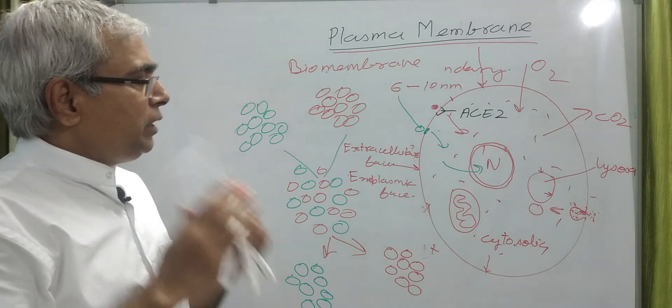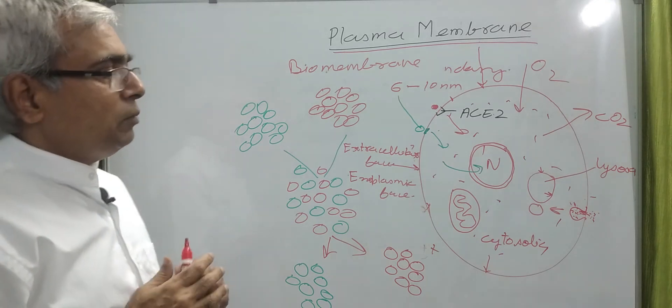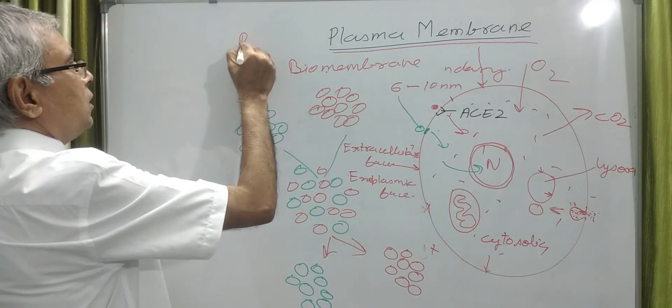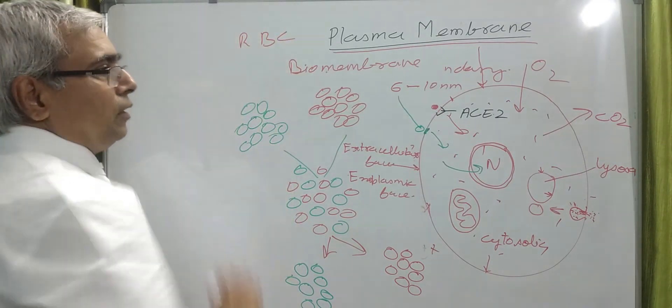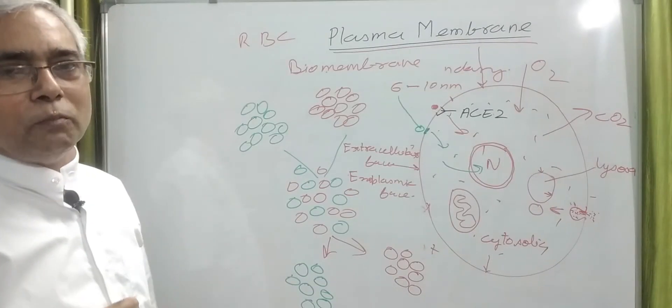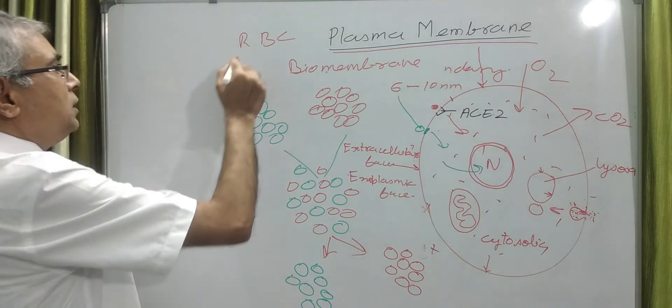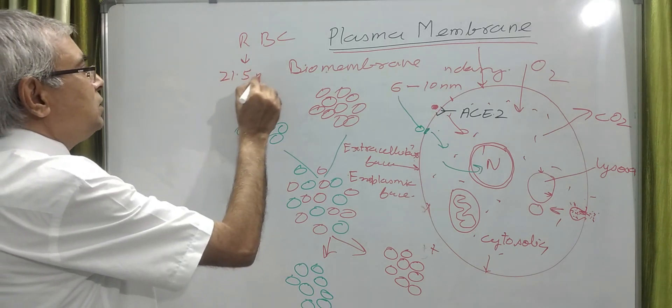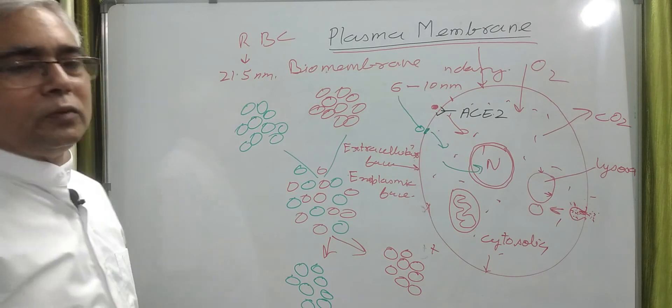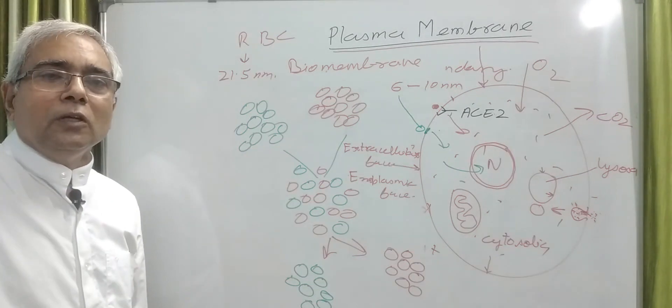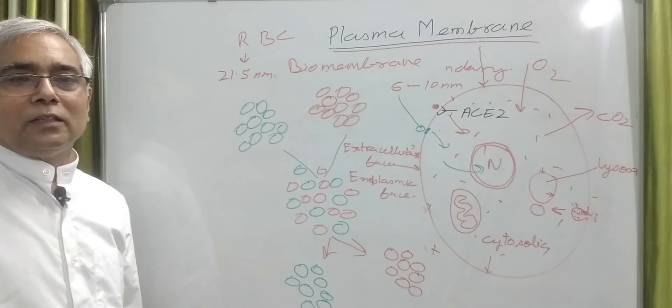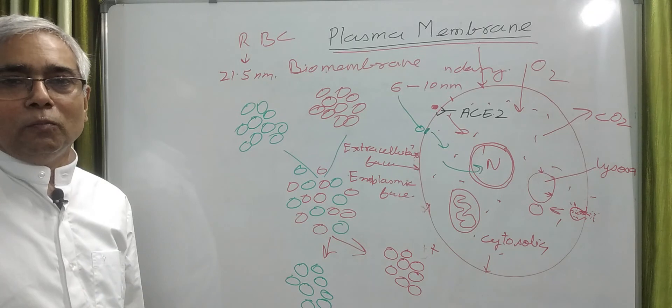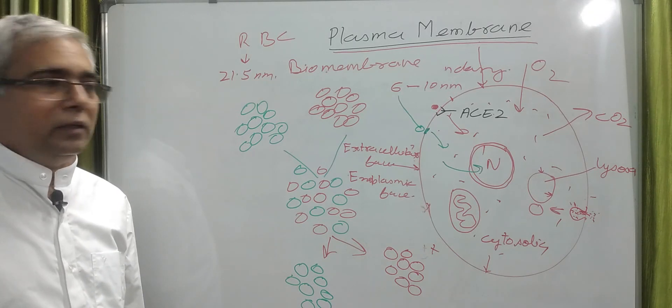The cell which is mainly studied for this plasma membrane is the red blood cell, RBC. RBC because its structure is simple and its thickness is about 7.5 nanometers. It can be separated easily and chemical and physical studies can be done easily.